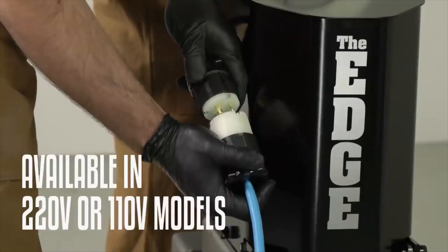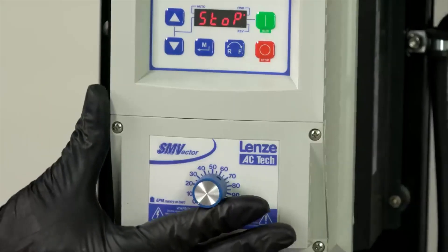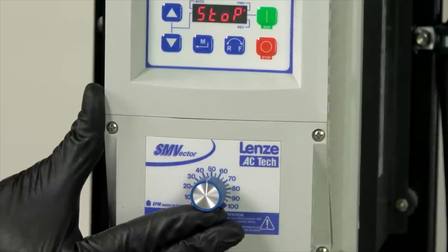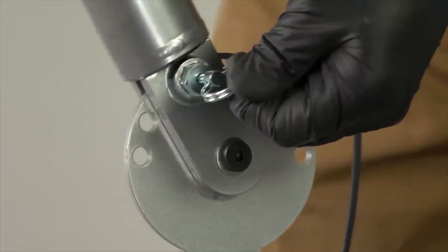The Edge is available in 220 or 110 volt models. Set the speed on the VFD to about the halfway point. Always start at a low speed and gradually increase the RPM as required. Adjust the handle to a position that is comfortable for you to operate the machine.